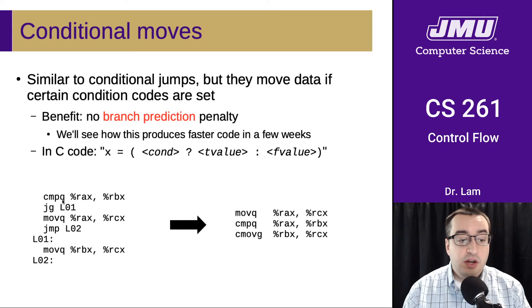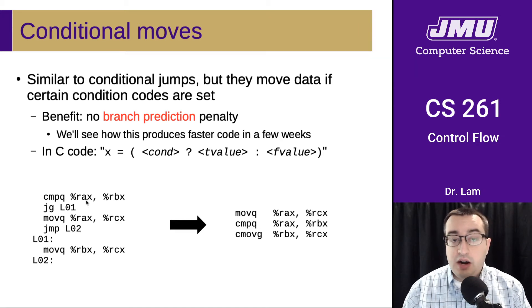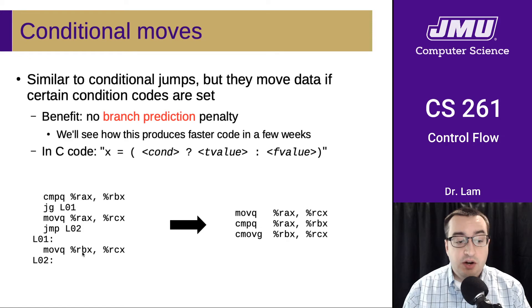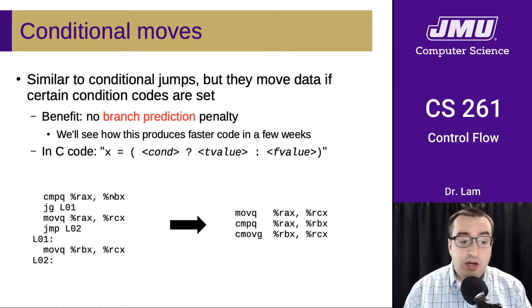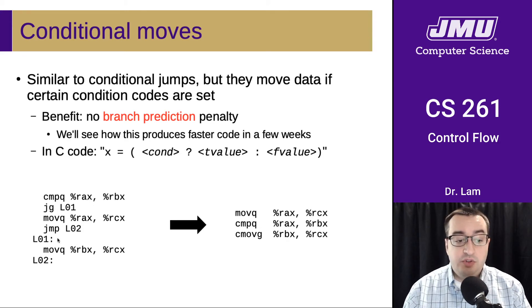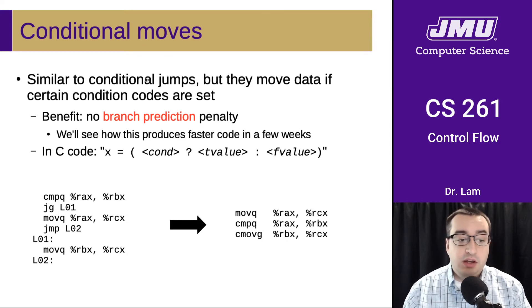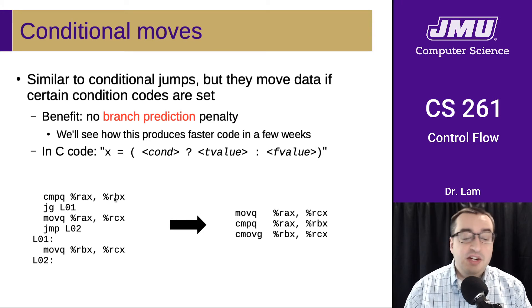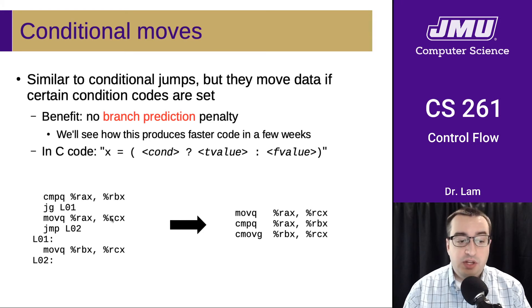For instance, here we have a comparison: we compare RBX with RAX. If RBX is greater than RAX, then we jump down to a label; otherwise we execute the instruction that moves RAX into RCX. Down at the label, we move RBX into RCX. Essentially, this is grabbing the maximum of RBX and RAX — if RBX is greater, we store RBX in RCX; if RBX is less than or equal to RAX, we end up executing the RAX move.